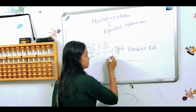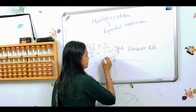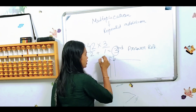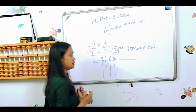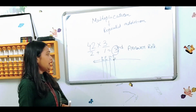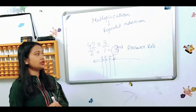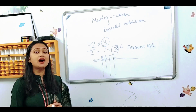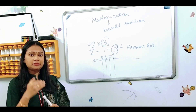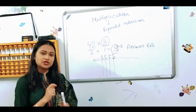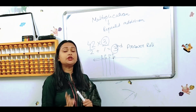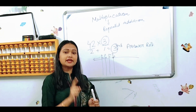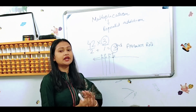The third rod is the fourth rod, the second rod, and the third rod. This is the multiplication of 8. So the third rod is the answer rod.